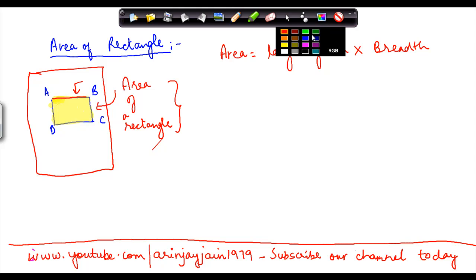So for example, the length of this rectangle is 10 cm and the breadth is 6 cm. So the area will be equal to 10 cm, which is the length, times the breadth, which is 6 cm.